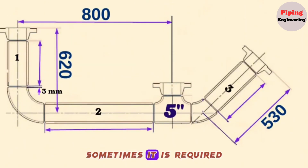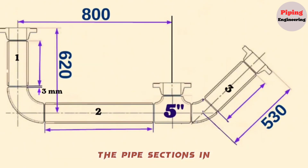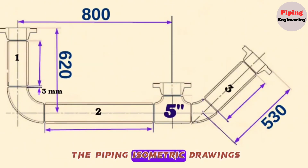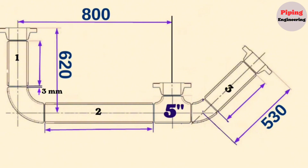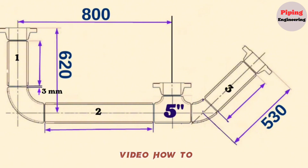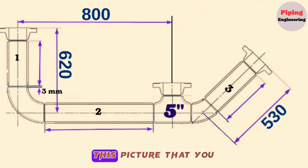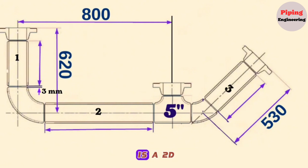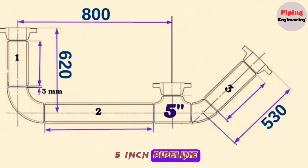Sometimes it is required to calculate the length of the pipe sections in the piping isometric drawings. We tried to explain with examples in this video how to calculate the length of the pipe pieces in the pipeline. The picture you see in the video is a 2D isometric drawing of the 5-inch pipeline.